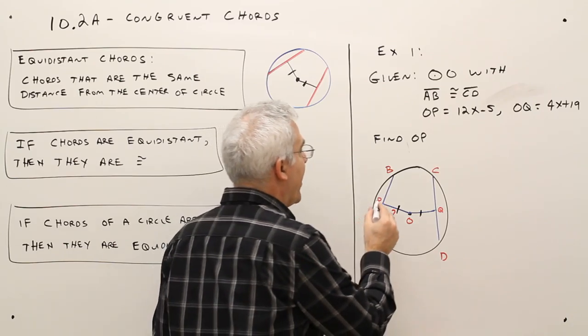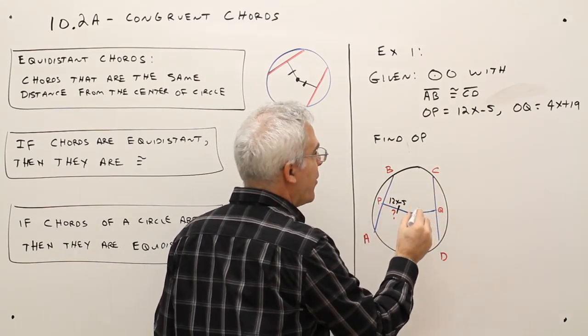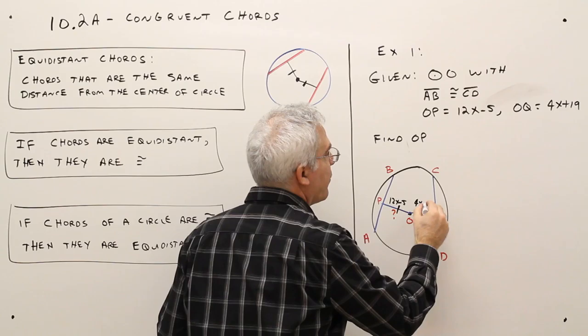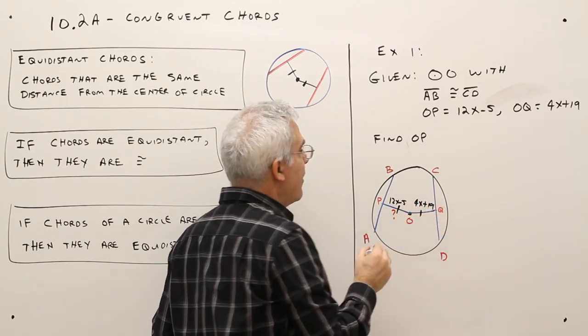OP is 12X minus 5, and OQ is 4X plus 19, find OP.